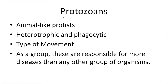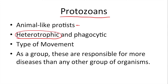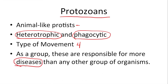The second group I want us to talk about are called protozoans. Protozoans are the animal-like protists because, remember, they're heterotrophic — meaning they have to ingest their chemical energy — and they're what we call phagocytic because they engulf it and take it in. We further categorize protozoans by their type of movement, and we'll talk about four different types. As a whole group, protozoans are responsible for more diseases than any other group of organism.